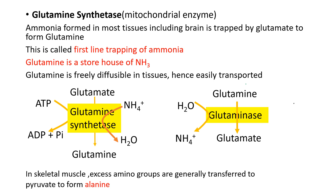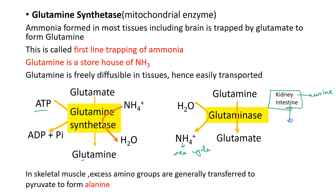Glutamine synthetase is present in most tissues of the body including the brain. It requires ATP and is a non-reversible reaction. The glutamine then travels to the liver and also to the kidney and intestine, where the highest concentrations of the glutaminase enzyme are present to release ammonia and form glutamate. This ammonia then enters the urea cycle, or in the case of the kidney is excreted into the urine. In the intestine, the ammonia released enters the liver via the portal blood and undergoes the urea cycle.